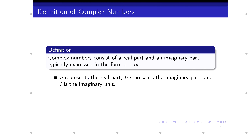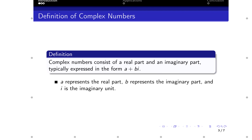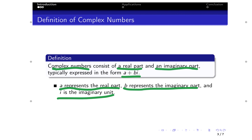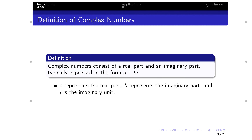How do you define complex numbers? Complex numbers consist of a real part and an imaginary part, typically expressed in the form a + bi. Here, a represents the real part, b represents the imaginary part, and i is the imaginary unit. Normally for real numbers all you would have is a, but now you have the imaginary part attached to the imaginary unit.